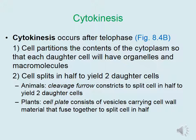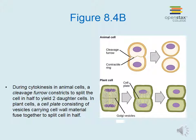In animal cells, a cleavage furrow constricts to split the cell in half to yield two daughter cells. In plant cells, a cell plate consisting of vesicles carrying cell wall material fuse together to split the cell in half.